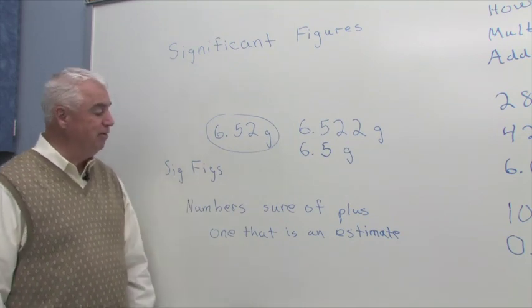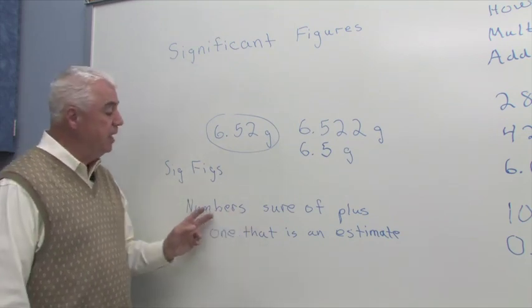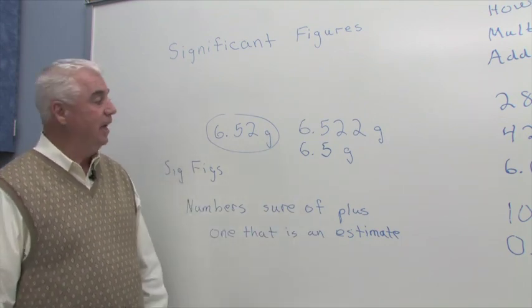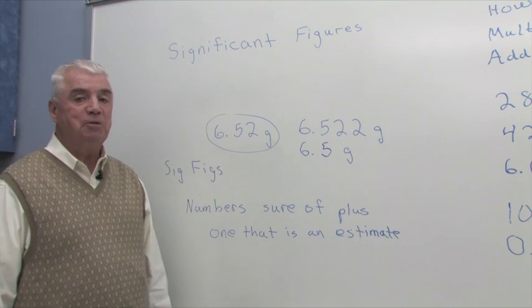The definition of significant figures is that they're numbers that we're sure of, plus one that's an estimate. And so coming back to the 6.52,